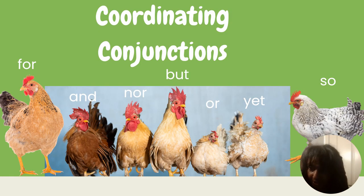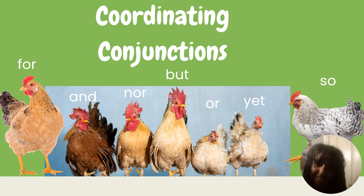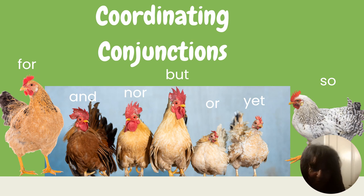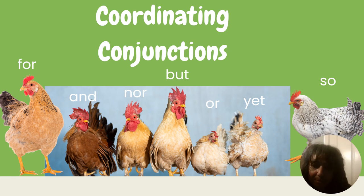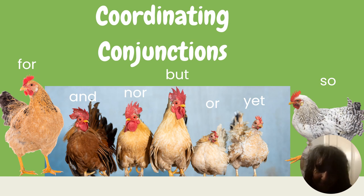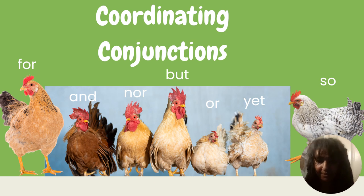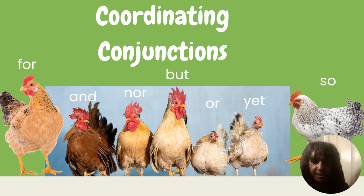So what are coordinating conjunctions and specifically why would we refer to them with the acronym FANBOYS? Well, let's take a look. Chicken number one represents the word FOR. Chicken number two represents the word AND. Chicken number three represents the word NOR, N-O-R. Chicken number four represents BUT. Chicken number five represents OR, O-R. Chicken number six represents YET. And chicken number seven represents SO. Throughout this presentation, I will be talking about each of these words, giving you a brief example, and then showing it to you in a sentence.